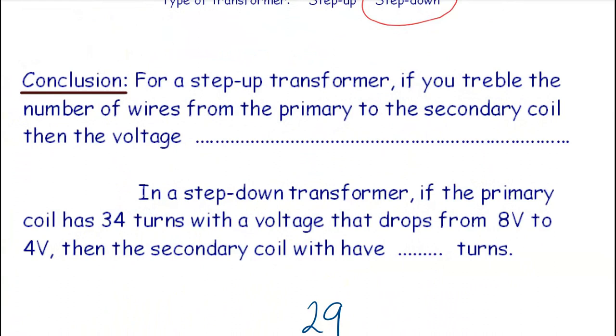So the conclusion for a step up transformer. If you treble the number of wires from the primary to the secondary coil, then the voltage increases by a factor of three. Treble means by three. In a step down transformer, if the primary coil has thirty-four turns with a voltage that drops from eight to four, so that's half the voltage, we'll have to have half the number of turns in the secondary. Then the secondary coil will have thirty-four divided by two, seventeen turns.